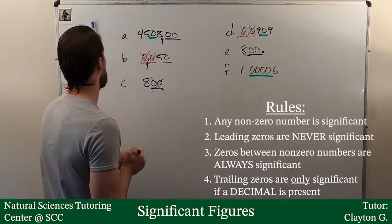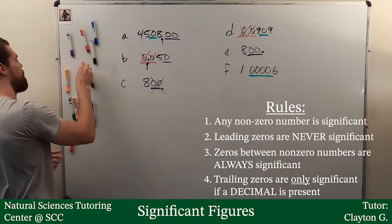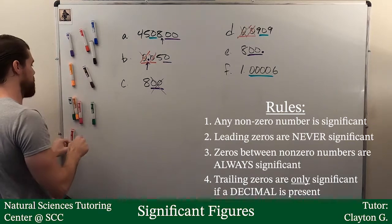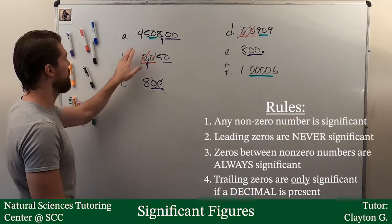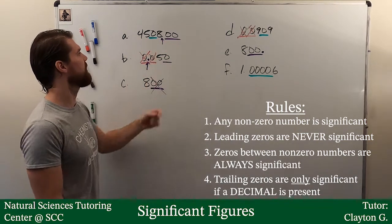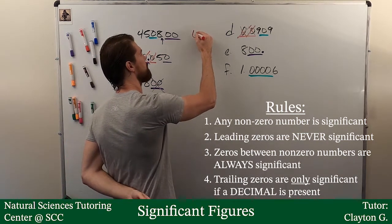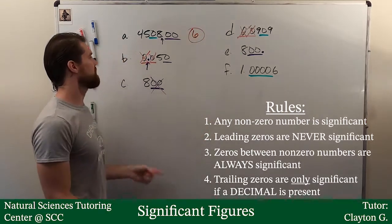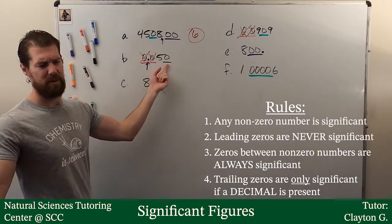So, let's go ahead and count them all up now. In this letter A: 1, 2, 3, 4, 5, 6. So, this has six significant digits or significant figures.